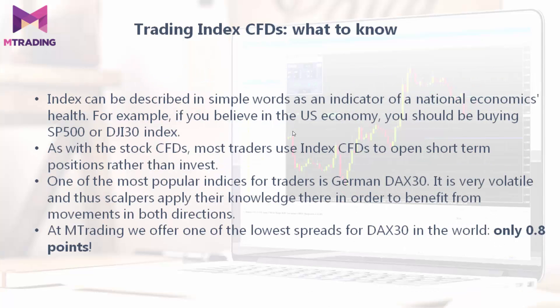Now moving on to index CFDs. An index can be described in simple words as an indicator of a national economy's health. For example, if you believe in the US economy, you should be buying the S&P 500 or DJI 30 index. As with stock CFDs, most traders use index CFDs to open short-term positions rather than invest long-term. One of the most popular indices for traders is the German DAX 30 — it is very volatile, and scalpers apply their knowledge there to benefit from movements in both directions. At mTrading we offer one of the lowest spreads for DAX 30 in the world, only 0.8 points.